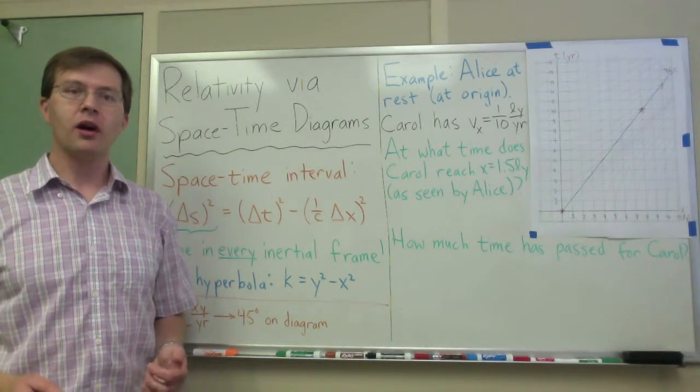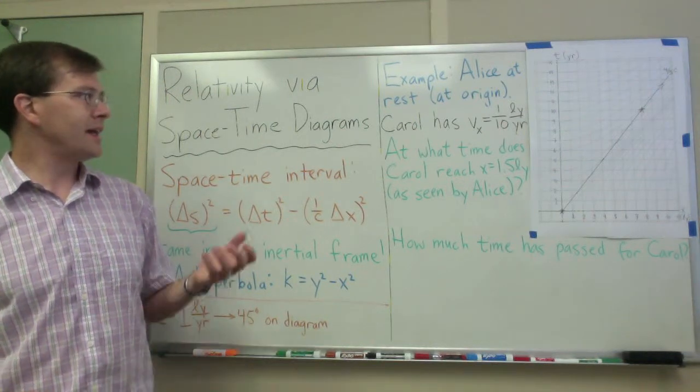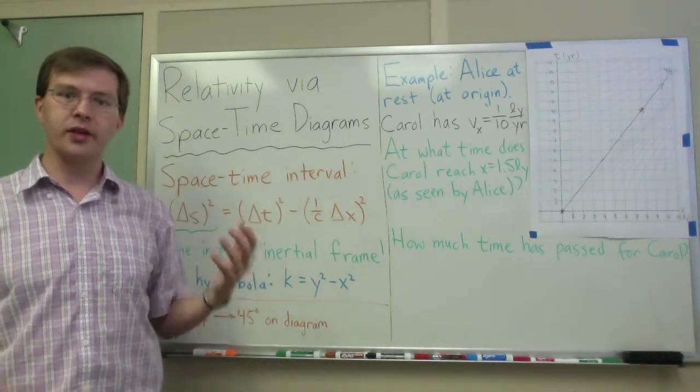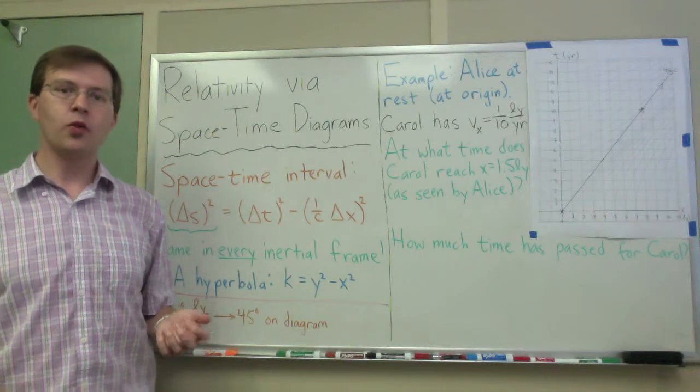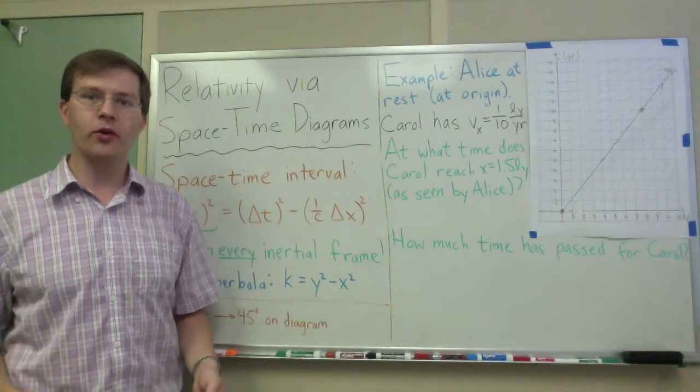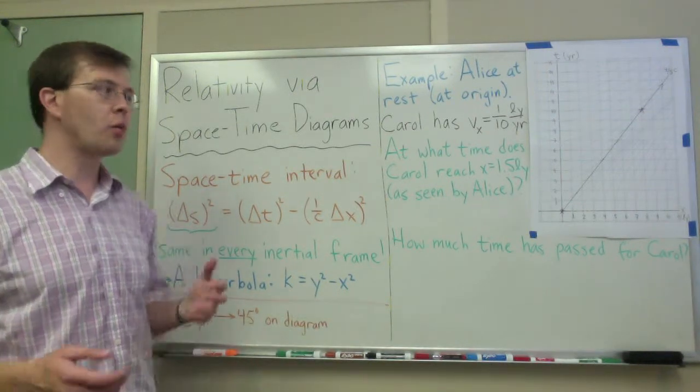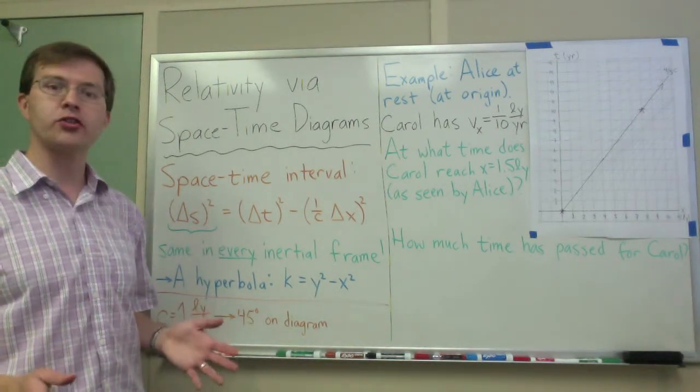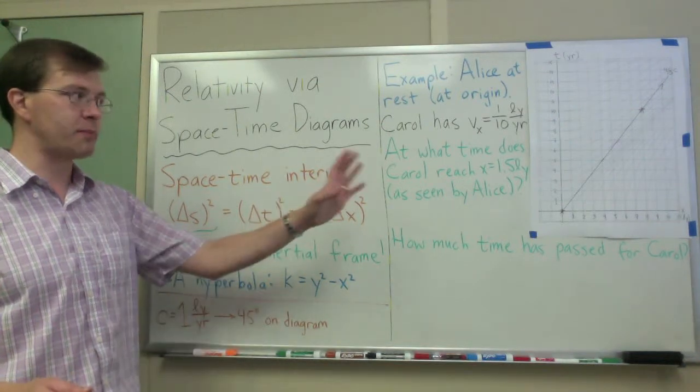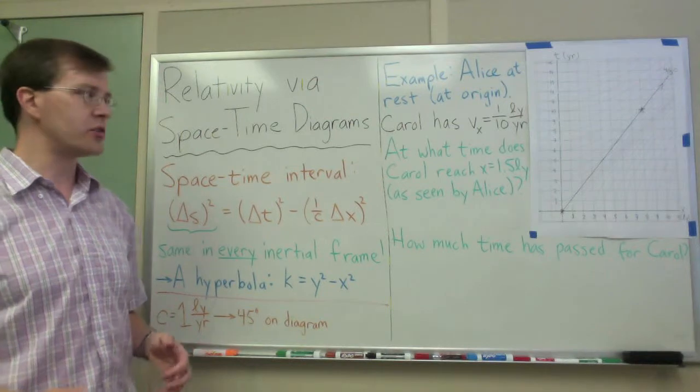I'd like to do another example of using space-time diagrams to calculate results in special relativity without needing to use any equations. This is not a video where I'm going to explain the diagrams from the ground up - I've already done one of those. But I want to show you how you can do one of these calculations using the special hyperbola graph paper very quickly and easily. Just as a reminder,